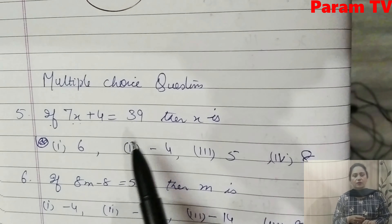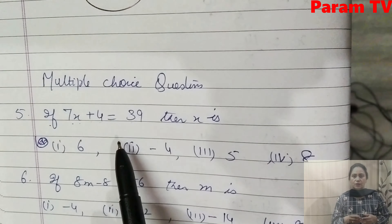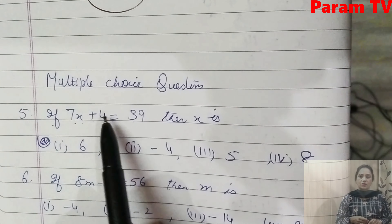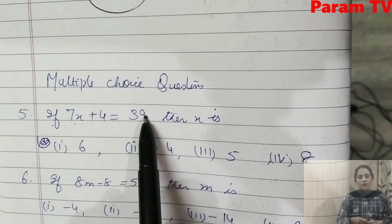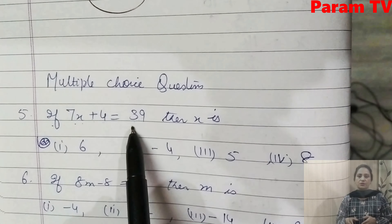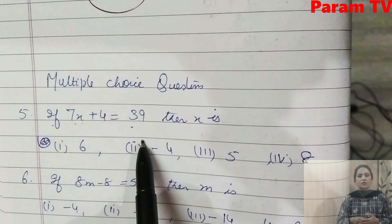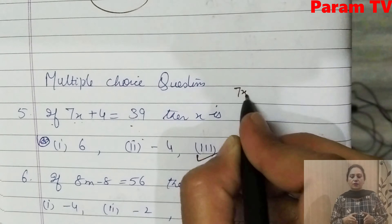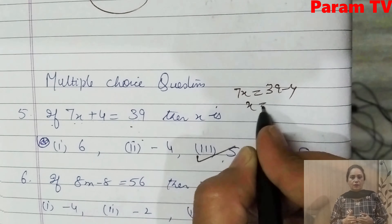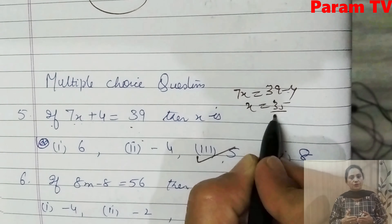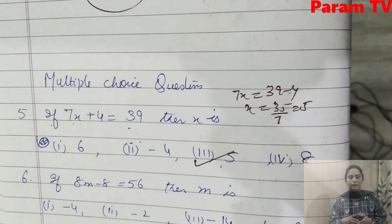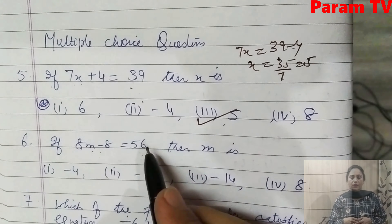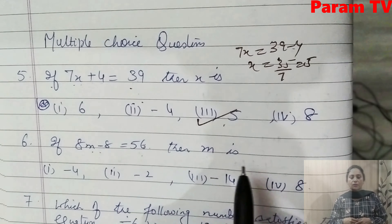Some MCQs have been given — multiple choice questions. First: if 7x + 4 = 39, then 7x = 39 - 4 = 35, and x = 35/7 = 5. So 5 is the solution. Next: 8m - 8 = 56. Adding 8 to both sides: 8m = 64. Dividing by 8: m = 8. The fourth option is the right answer.